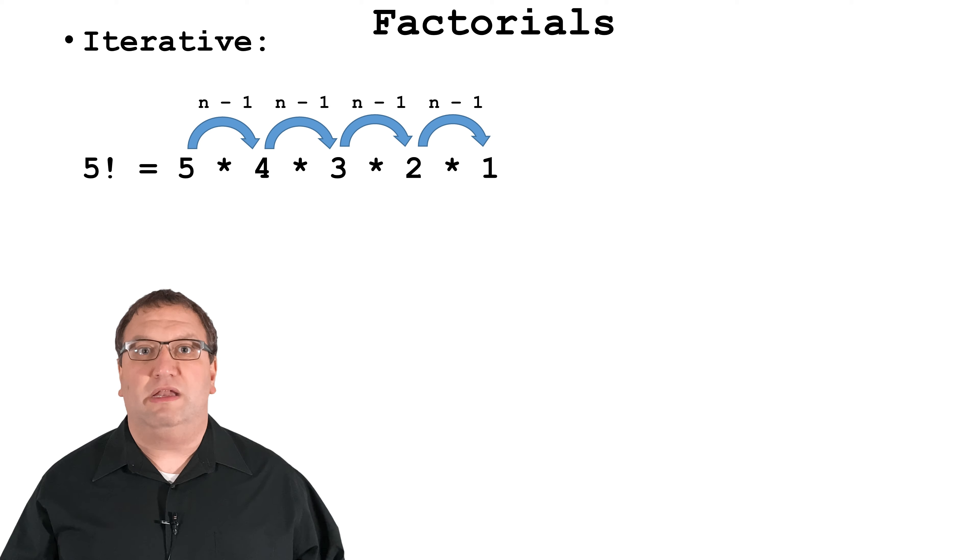In math class, you learn to calculate factorials iteratively. Let's go back and look at 5 factorial. We start with the 5 and keep multiplying it by n minus 1 until we get to 1. If you stop and think, you could see how you could program this algorithm iteratively using a loop. Now here's where it gets interesting.